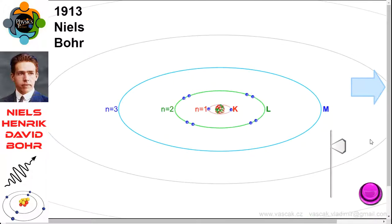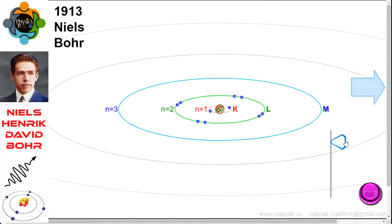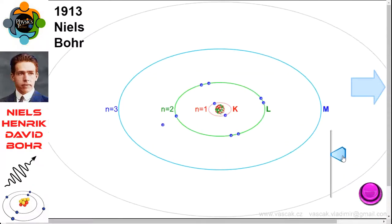Today we know that the Bohr model has some inaccuracies, but it is still used because of its simple approach to atomic theory. The Bohr model was also the first atomic model to incorporate quantum theory, meaning that it is the predecessor of today's more accurate quantum mechanical models.